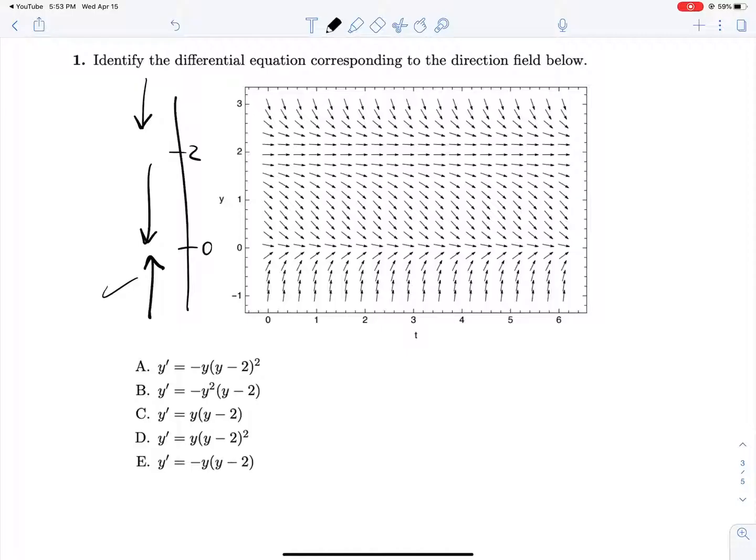Then if we plug in, let's say 1, we have a negative times a positive times a positive. So that gives us the negative behavior that we're looking for. And if we plug in, let's say 10, we get a negative times a positive times another positive. So yet again we get that behavior, and A is our correct answer.